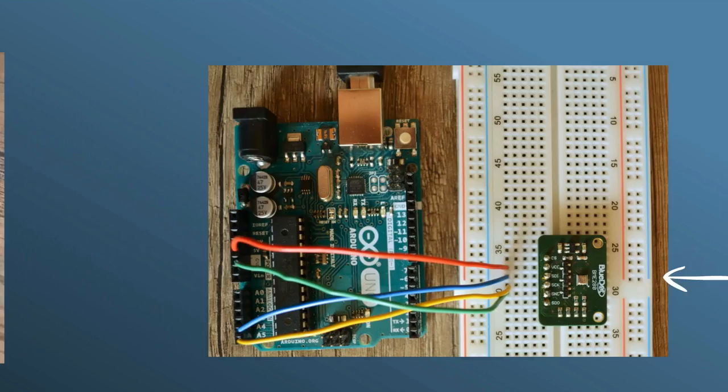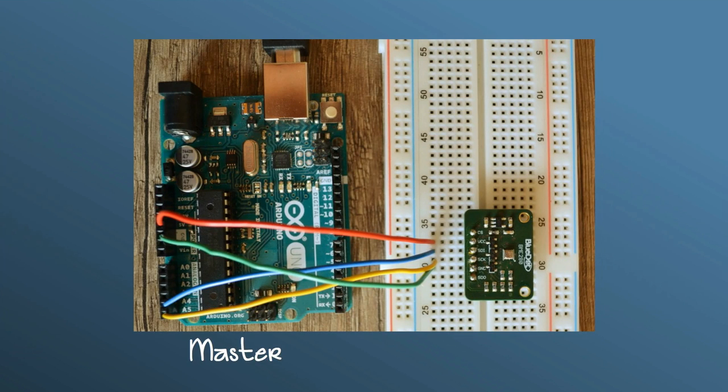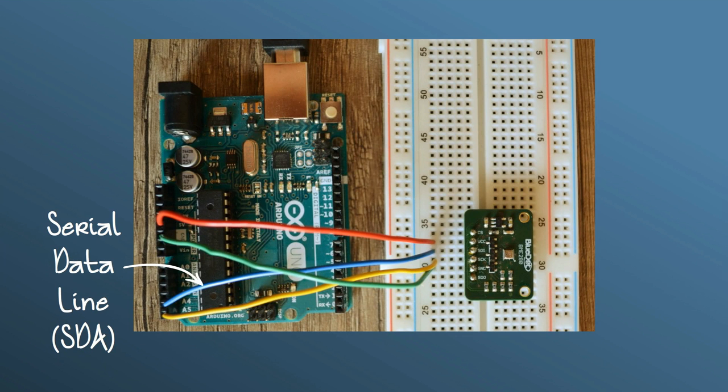If you're connecting a digital sensor using the pins A4 and A5 of your Arduino Uno, then you're using the I2C bus. In this scenario, the Arduino is the master and the sensor is the slave. You need only two wires to run the communication. One of them is a serial data line, and the other one is a serial clock line.